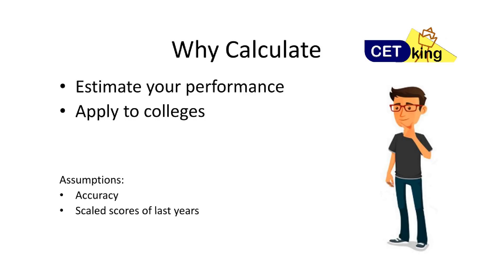The problem is: I need to know how I did, I can't wait 45 days. We are in an era of instant results. Number two, because you need to apply to colleges right now before the result is out, you need a ballpark number to predict which colleges you can apply for. Number three, you need to know your CAT percentile so you can accordingly prepare for other exams — SNAP, XAT, and so on.